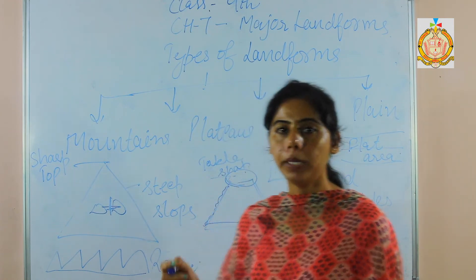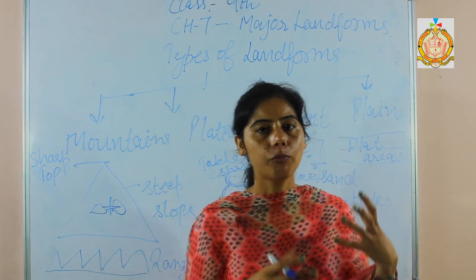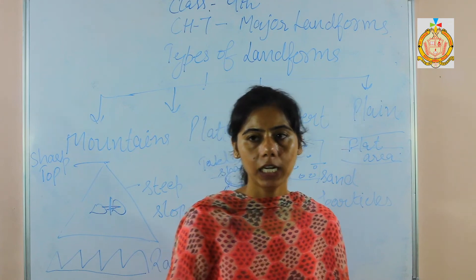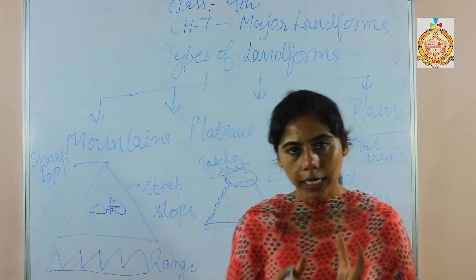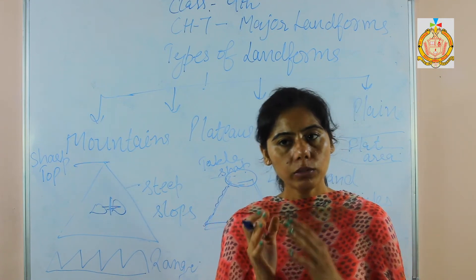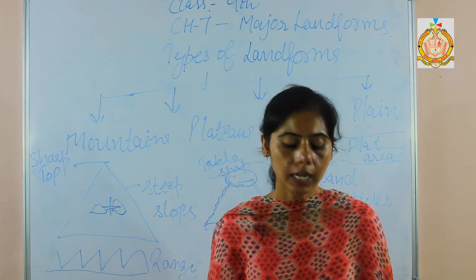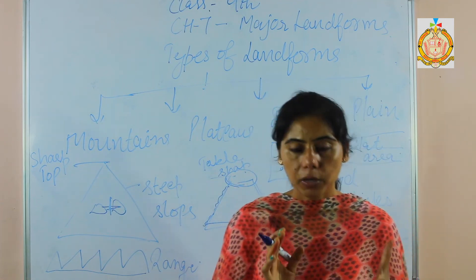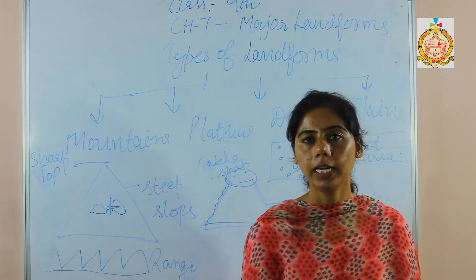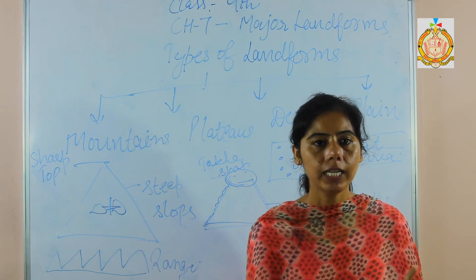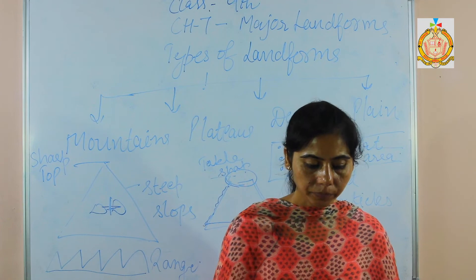The next landform is plains. Plains are flat areas — a vast area of flat land. Plains are most suitable for agriculture, construction, transport, communication, and industrial sectors. For example, in India, the Indo-Gangetic Plains are the most densely populated because the land is very flat, fertile, and most suitable for living. Climatic conditions in plain areas are also favourable for the health and life of people.